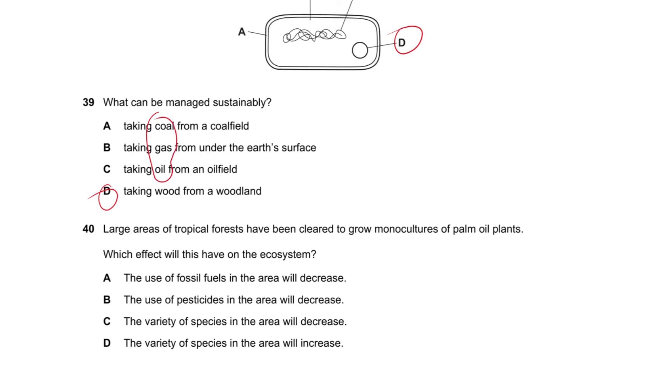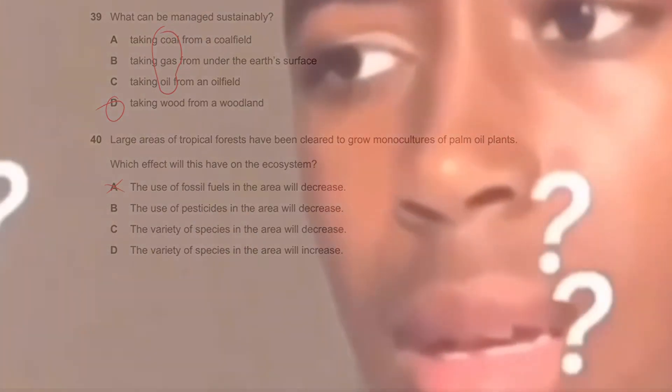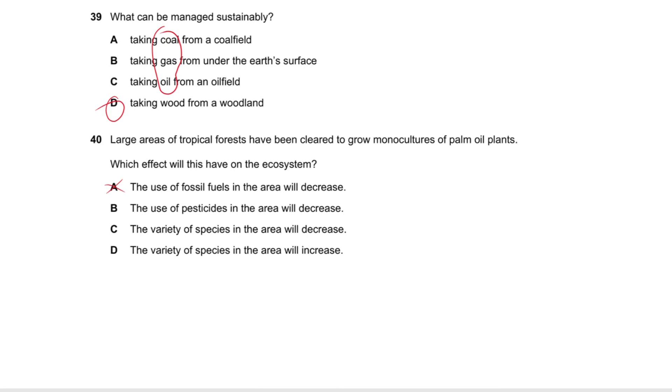Question number 40 says large areas of tropical forests have been cleared to grow monocultures of palm oil plants. Which effect will this have on the ecosystem? The use of fossil fuels in the area will decrease? No, that doesn't even make sense. The use of pesticides in the area will decrease? No. The variety of species will decrease? Yes, because it's obviously a monoculture, so it's just one plant. Not only are the other plants not going to be there, the other animals that rely on those other plants that are not there are going to die, and the animals that rely on those animals that rely on the plants are going to die. The variety of species will increase? No. So that's the end of the video. If you liked it, please support the channel by liking, sharing, and subscribing. It means a lot to me. Okay, see you in the next video.